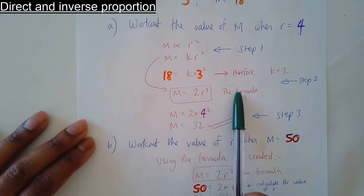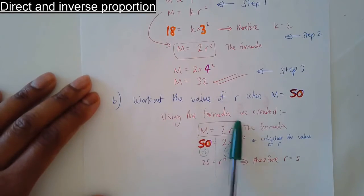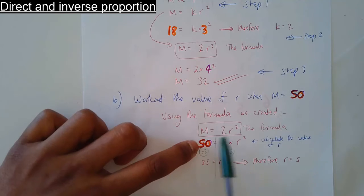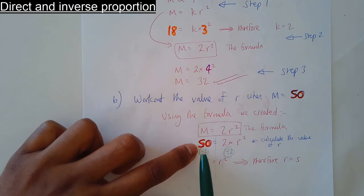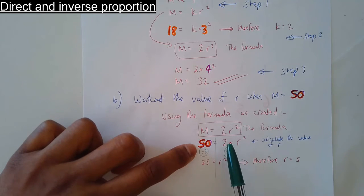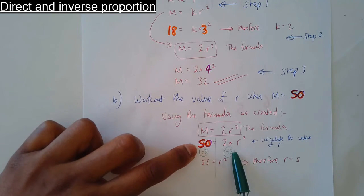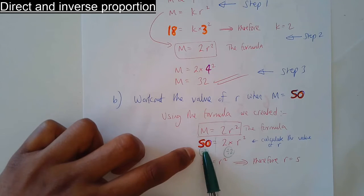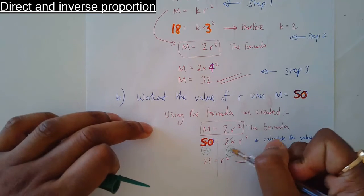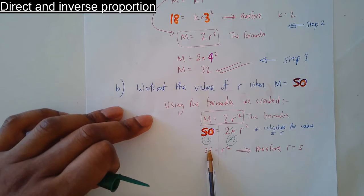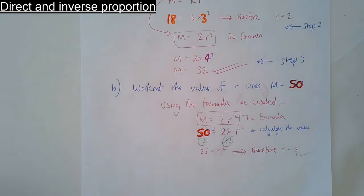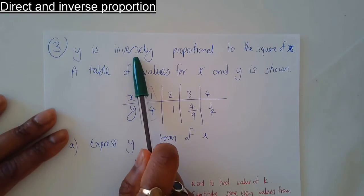Part 2: find the value of r when m is equal to 50. We're going to use the formula m equals 2r squared. Substitute m equals 50: 2 times r squared equals 50. To get rid of the times by 2, divide both sides by 2 — 50 divided by 2 is 25, and the 2s cancel, leaving r squared equals 25. Something squared to give 25 — that's 5 squared. So r is equal to 5.